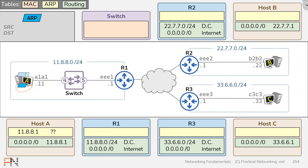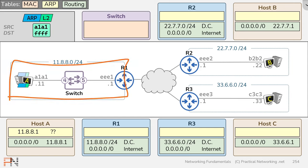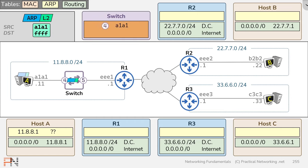The ARP request is going to have a layer 2 header with a source MAC address of host A and a destination MAC address of all F's — the broadcast MAC address — which tells the network this ARP request should be sent to everybody. When host A puts that on the wire, it'll arrive on the switch. Anytime something is received on a switch, it tries to learn the mapping between the receiving switch port and the source MAC address. In this case, the source MAC address is A1A1 and the receiving port is port 4. So the switch learns that something out port 4 owns MAC address A1A1. Then the switch looks at the destination MAC address — all F's — which triggers the flooding action, sending the frame out all ports. In our topology, that frame is sent out port 5, where it arrives on router 1.